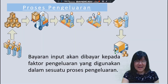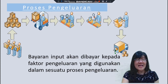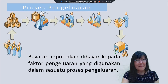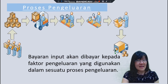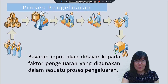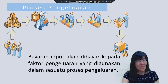Hari ini, cikgu akan membawa anda semua melihat kadar bunga dalam konteks ekonomi yang berbeza. Kita tahu bahawa dalam proses pengeluaran, kita akan menggunakan empat jenis input untuk menghasilkan output, iaitu barang atau perkhidmatan. Apakah input yang kita gunakan? Ia adalah tanah, buruh, modal dan usahawan.